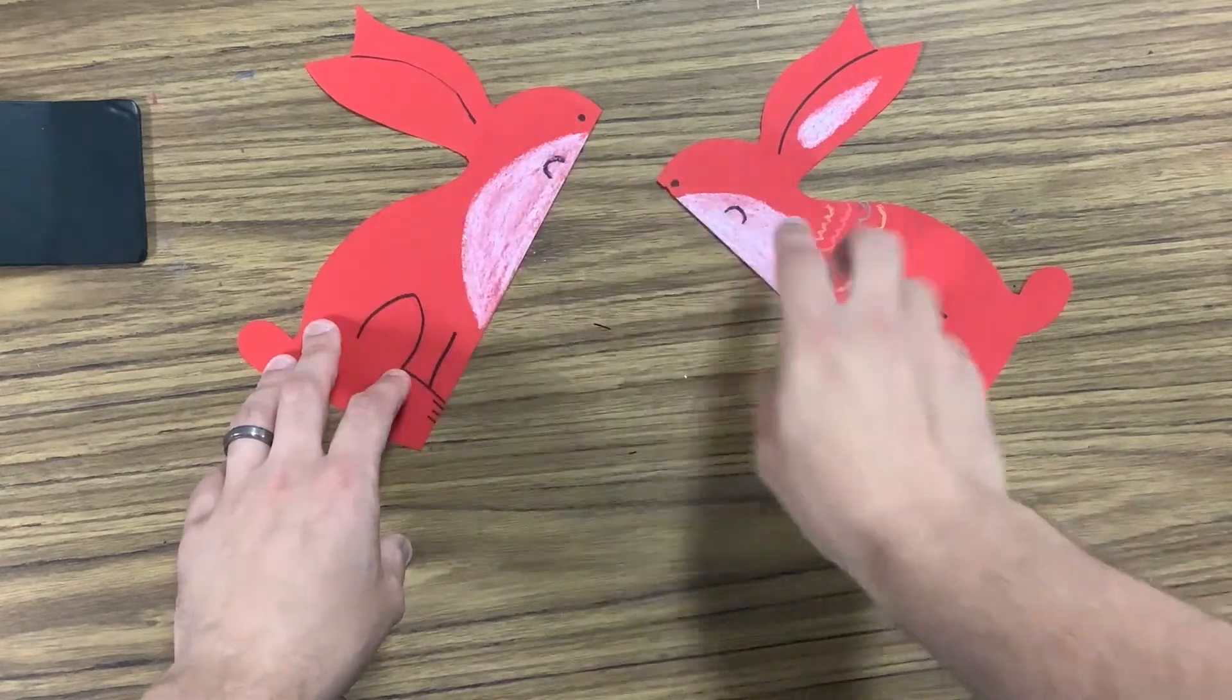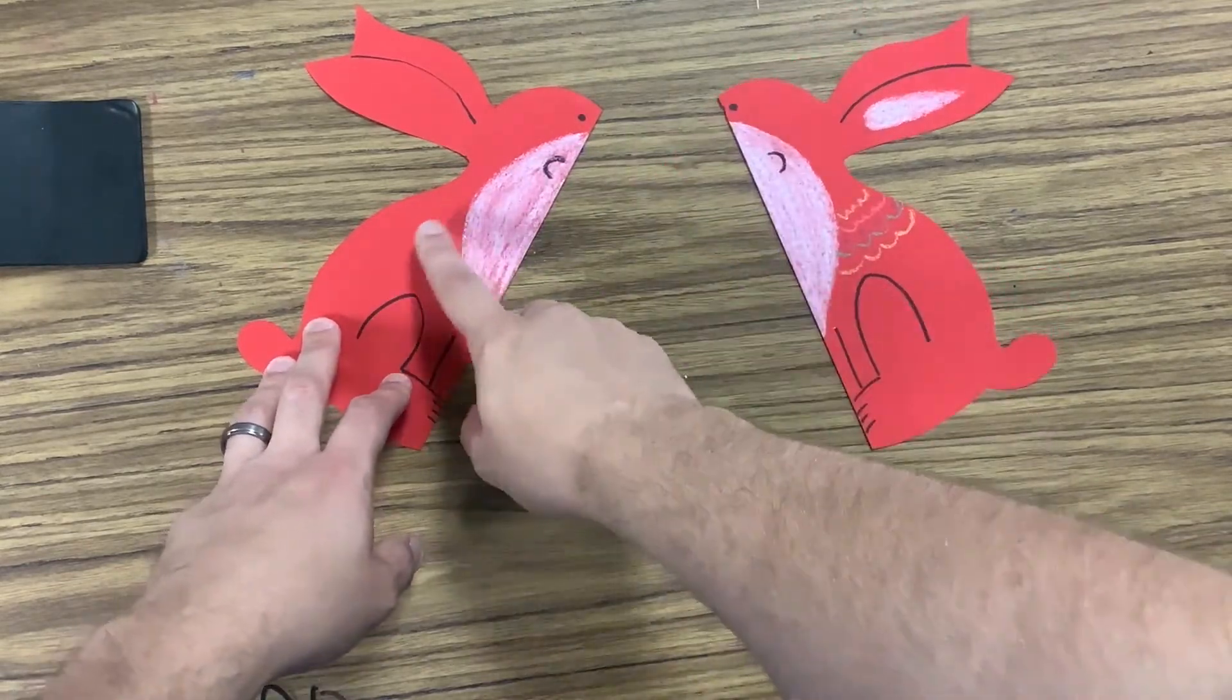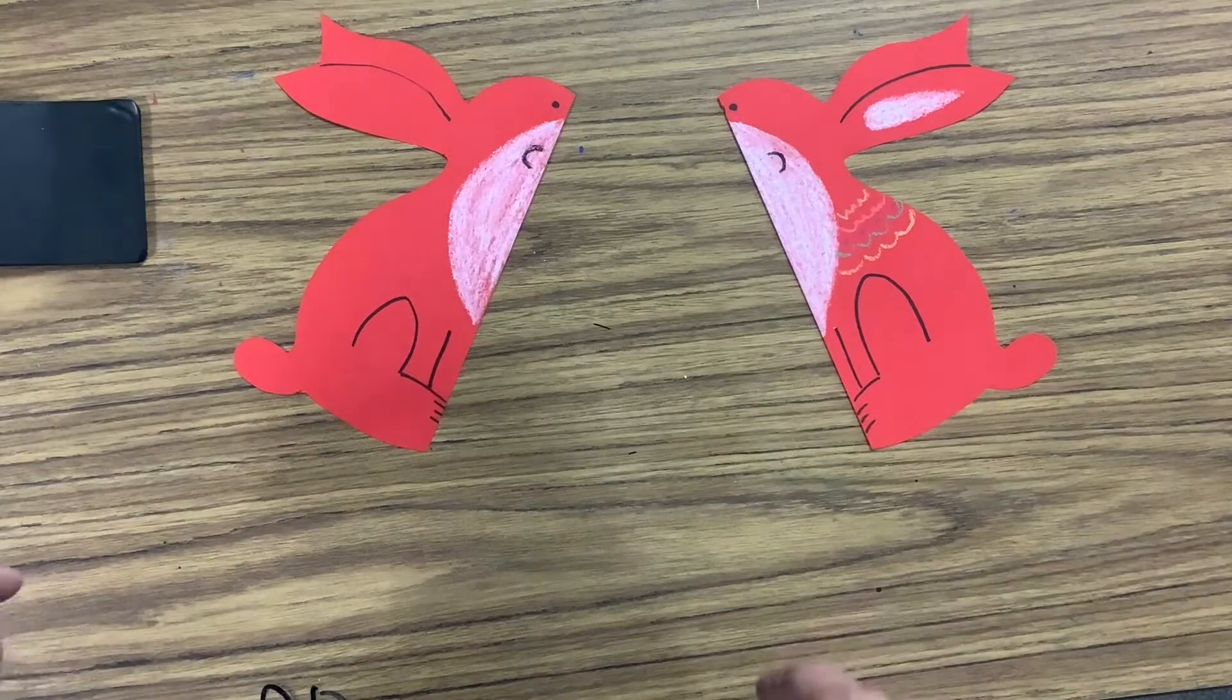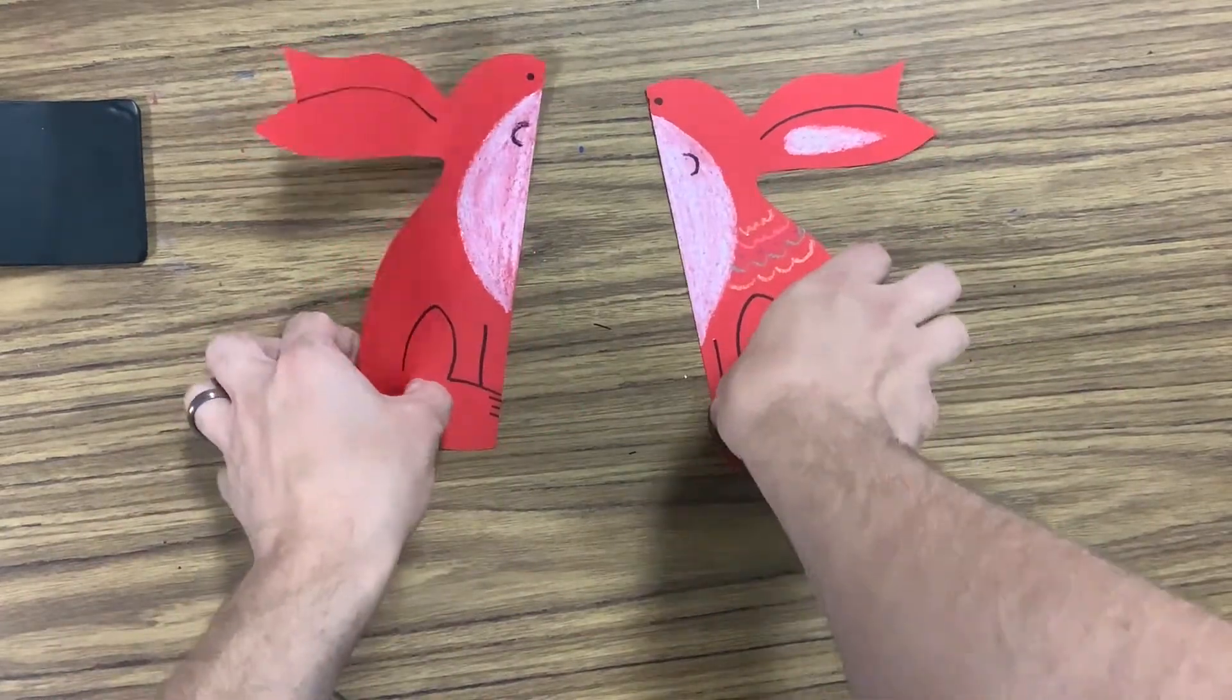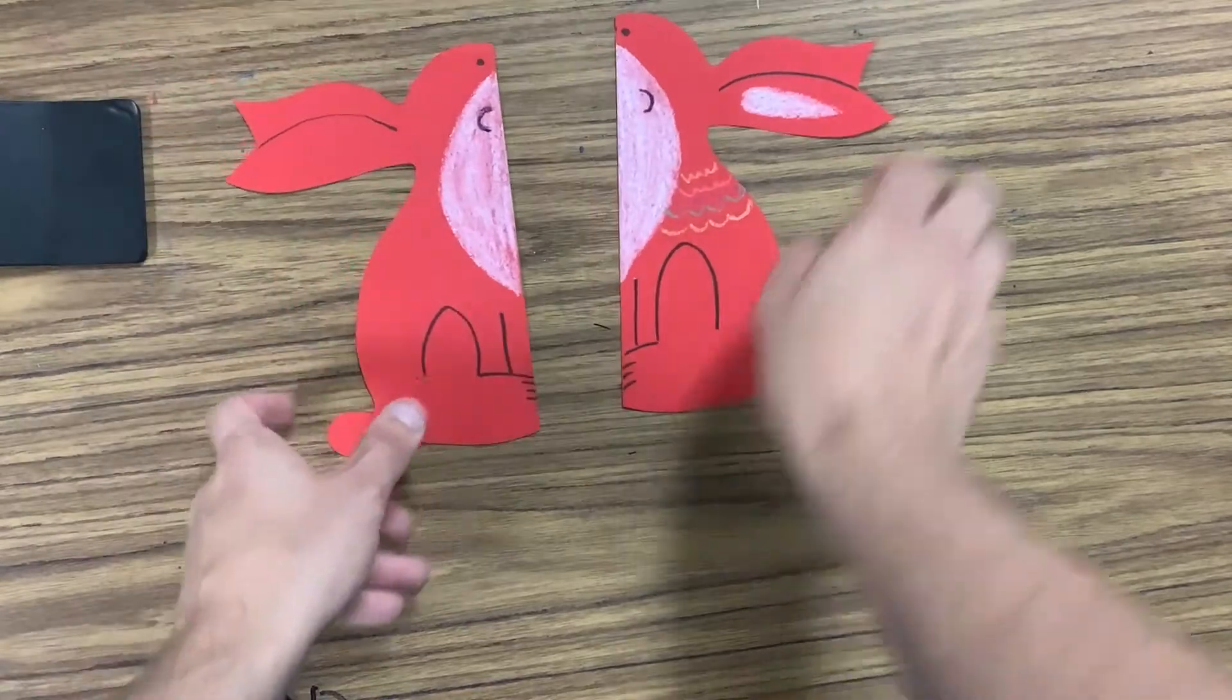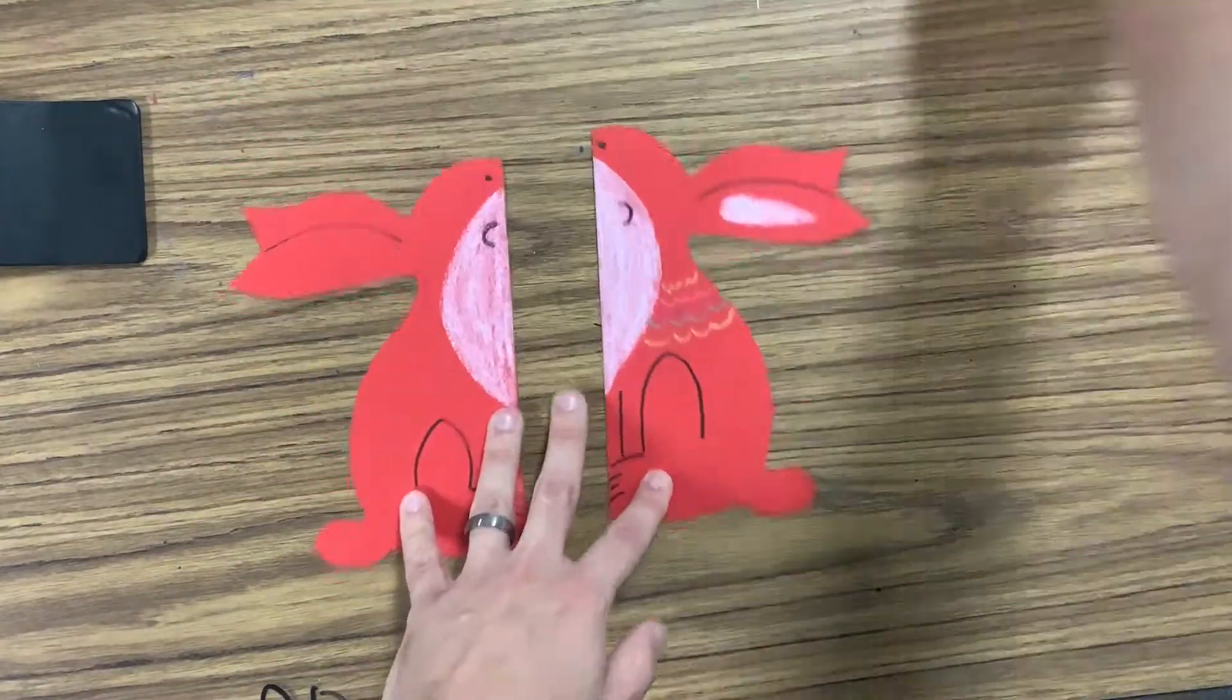If you get at least the bunnies cut out and drawn, that'd be great. If you didn't get it all decorated, you'll have time next week to finish it as well. So our goal is to make two bunnies today. What you'll be needing is some red paper, which everybody will get in a second.